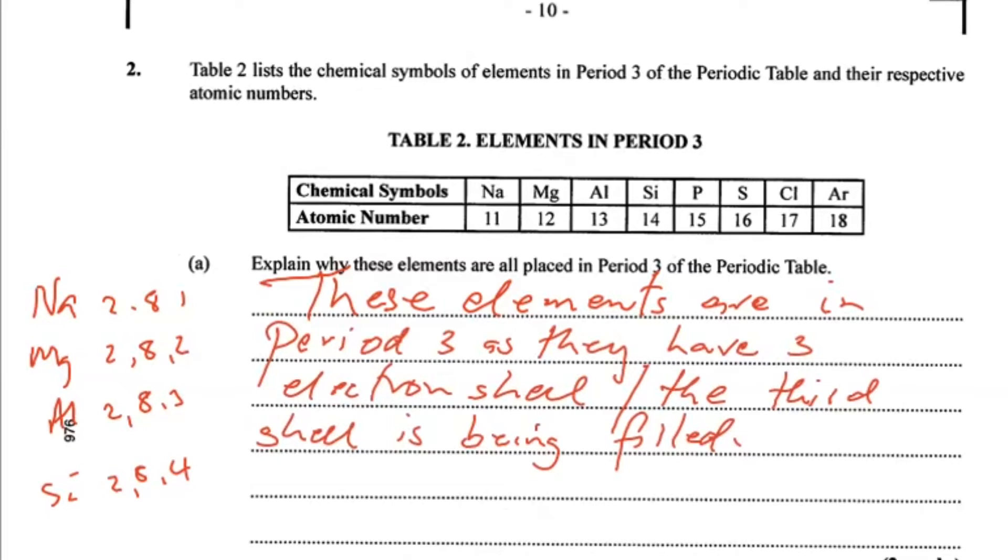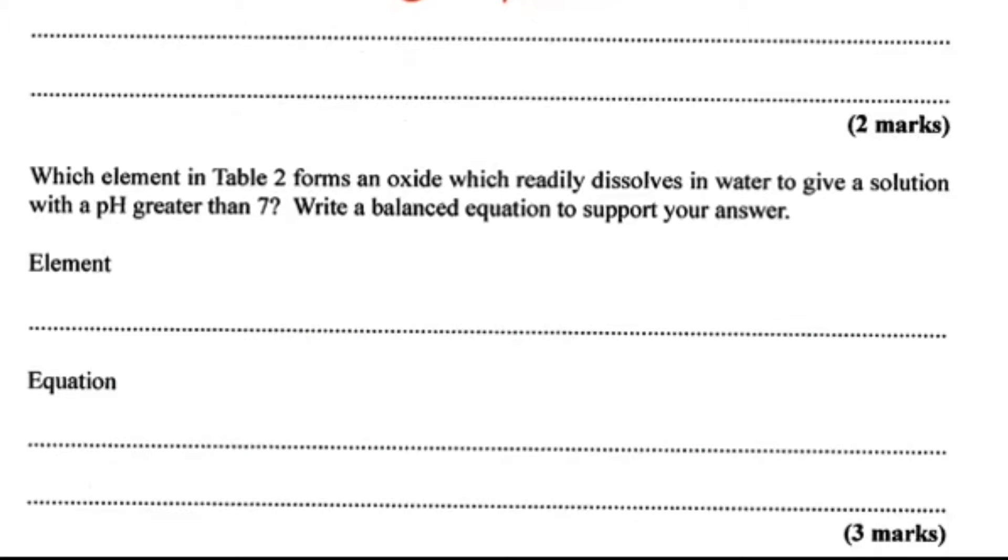Part B: Which element in Table 2 forms an oxide which readily dissolves in water to give a solution with a pH greater than 7? Write a balanced equation to support your answer. pH above 7, we're talking about something that's basic, so it could work with sodium or magnesium. I'm going to work with sodium. Sodium will give us an alkali.